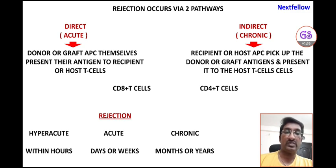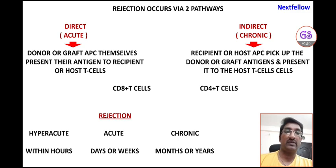Based on duration, rejection is classified into three types: hyperacute, acute, and chronic. Hyperacute rejection occurs within hours but is very rare nowadays. Acute rejection occurs within days or weeks, and chronic rejection occurs months or years after transplantation.